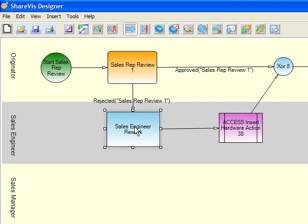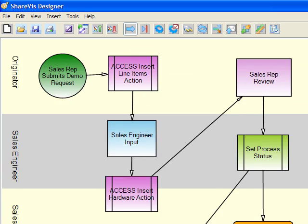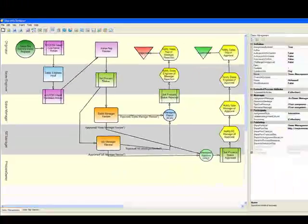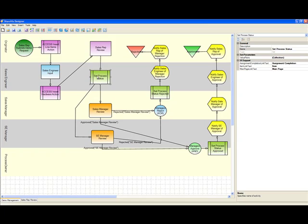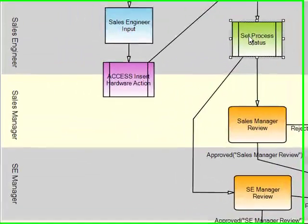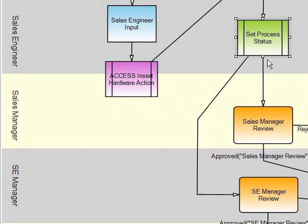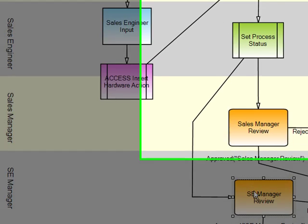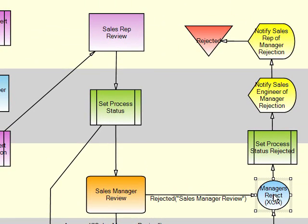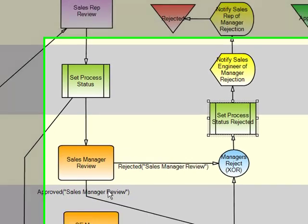It's going to go between these two until they're happy. After that, we're setting some process variables to set the status, and then going in parallel to the sales manager for review and to the SE manager for their review. If either one of them rejects it, it's going to go up here, be rejected, set the status, and basically notify everybody.